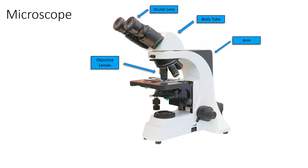The 100 times objective is the oil immersion lens. The only time you need or should use the 100 times is if you have to distinguish between very small images, like looking at prokaryotes. You have to ensure you're using immersion oil in order to effectively use that lens. Then you have objective lenses at 4, 10, and 40 times. To calculate total magnification, you take the ocular lens magnification and multiply it by the objective lens magnification.